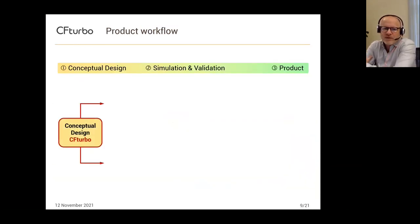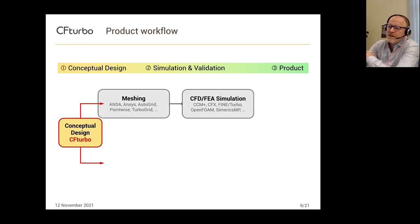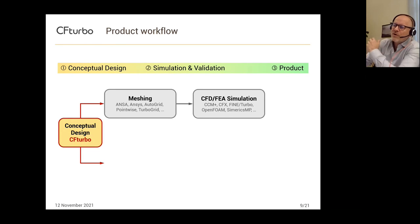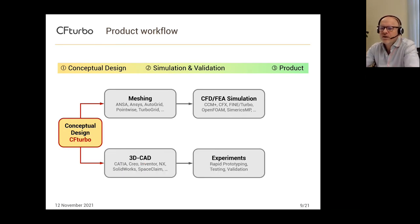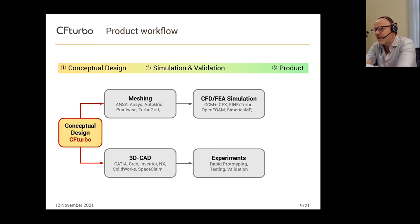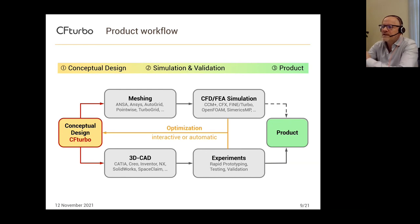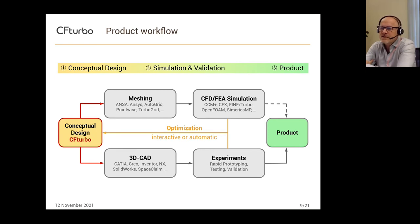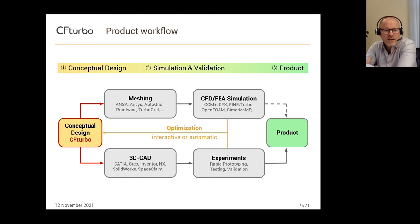Looking at the product workflow of a typical turbo machine, CF Turbo is located at the beginning of this process. Afterwards there are two options: we could use the modern approach of simulation workflows, or alternatively you could use CF Turbo interfaces to CAD systems and use rapid prototyping methods and experiments. Based on simulation or measurement results, you have to step back to the design system and run iterative loops to find the optimum solution. This optimization could be interactive or manual, or you could use optimization software like ANSYS Design Explorer or OptiSlang, as we will see some examples later.